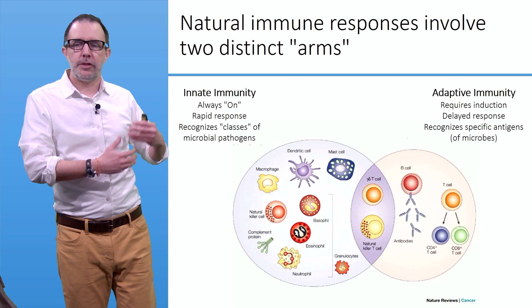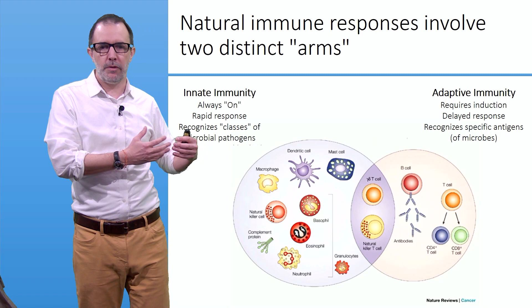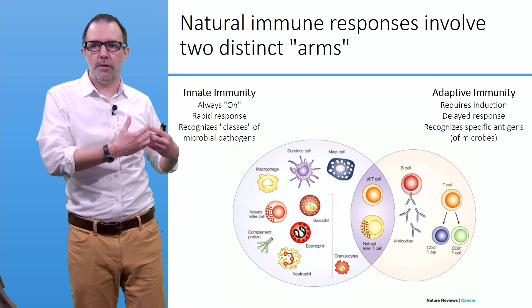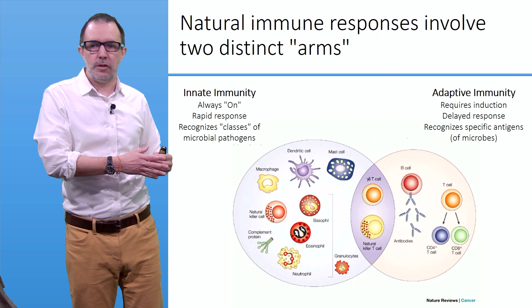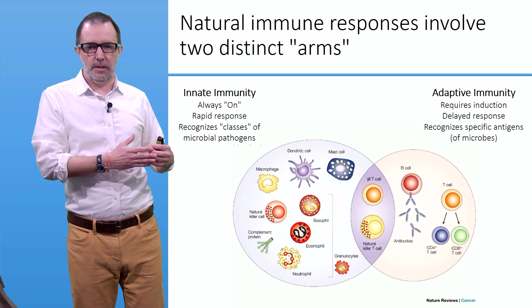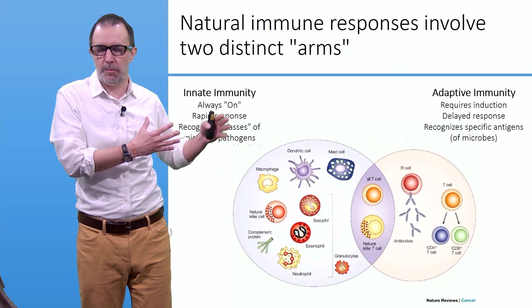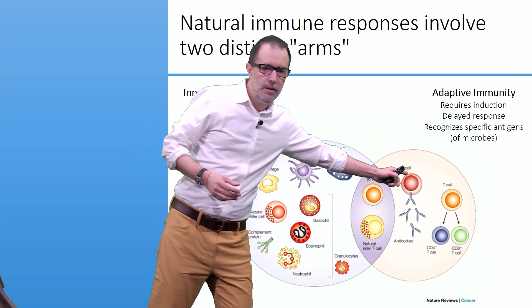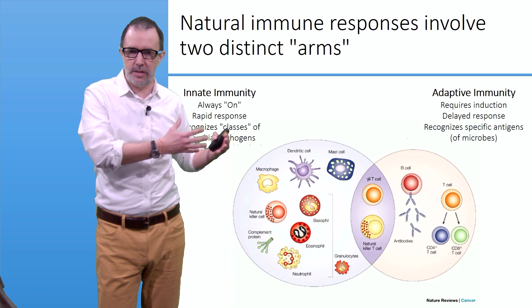The second step of our response is called adaptive immunity. As its name suggests, it is an adaptive response — it requires induction. It requires being taught how to recognize specific pathogens and being ordered to mount a response against them, such as cancer cells. It's a delayed response, typically one to two weeks in humans, and will be very specific to recognizing specific antigens. Among the adaptive immunity cells are T cells, especially CD8-positive T cells, which are the effector cells of the adaptive immune response against cancer.